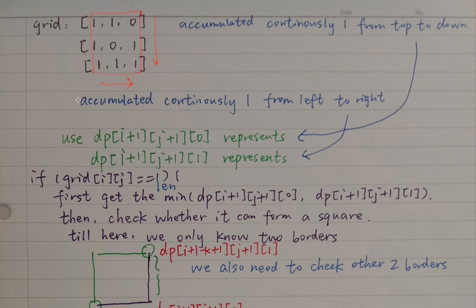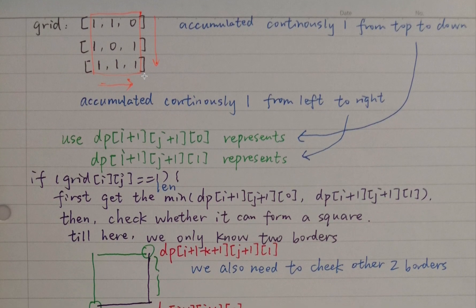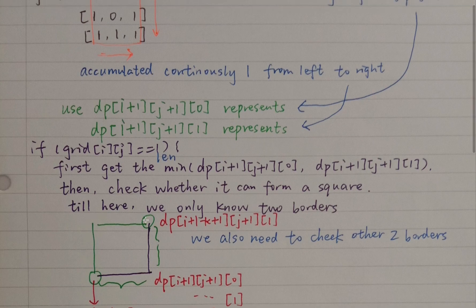We just need to iterate the whole grid. If the current element is one, we can form a square. If the current element is zero, we just let all the continuous ones from top to down and from left to right be zero, because all of this should be continuous. If the current element is one, we first get the minimum of these two parts, because that means the largest possible length of the square. Then we check whether it can form a square, because here we just know two sides and we also need to know the other two sides.